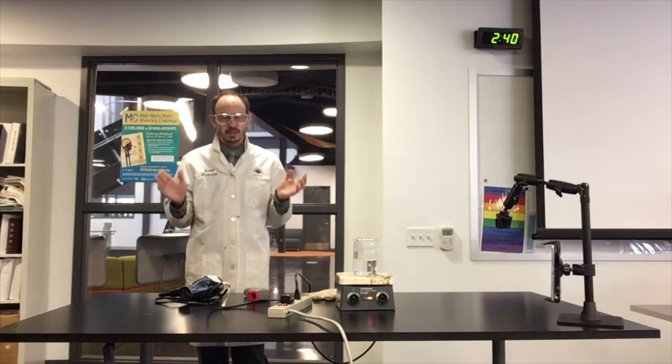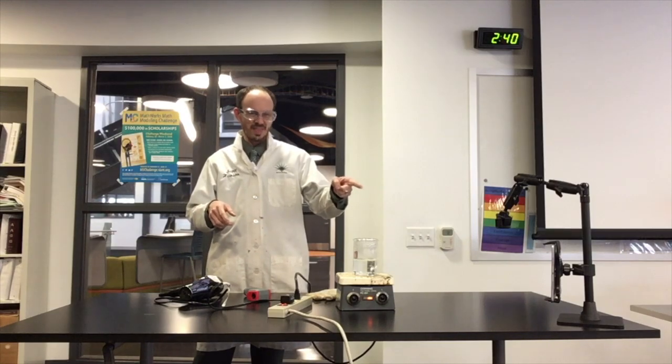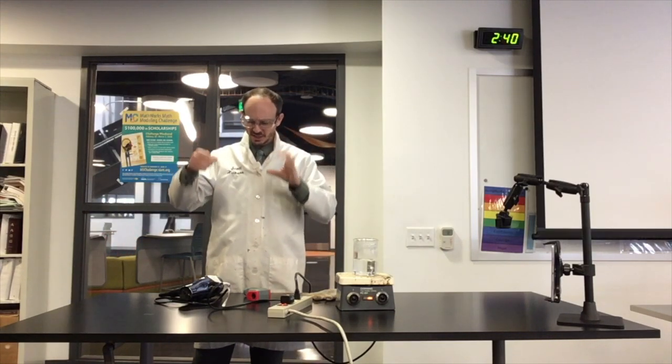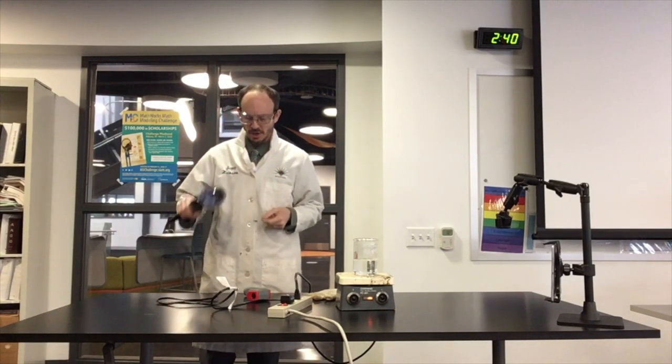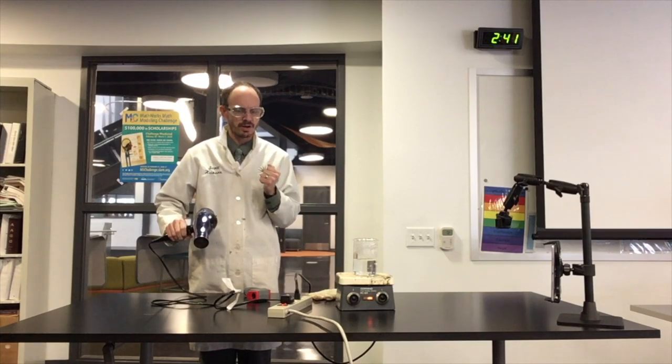And the first thing I'm going to do is I'm just going to run the hair dryer and then I will show you with that camera that the red light, the thing that's going to take the temperature, is going to be in the center of the hair dryer right there so we're going to get as good of a temperature reading right in the center of that hair dryer as possible.